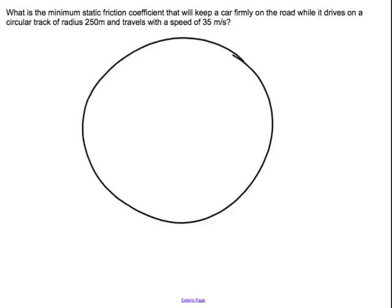It's a fairly simplistic turn that the car is making. We just have a circular track. We are told that the radius of this track is 250 meters, and then I have a vehicle sitting over here.